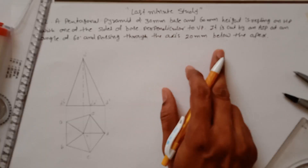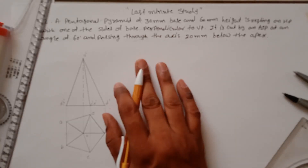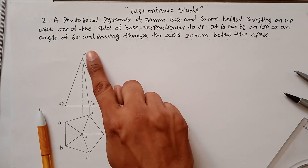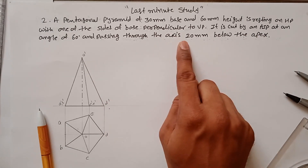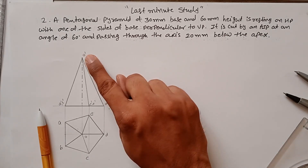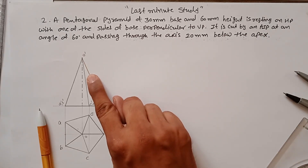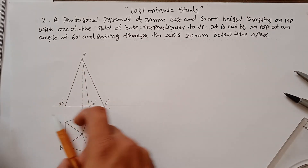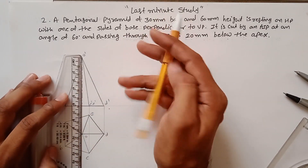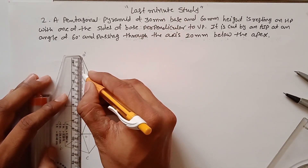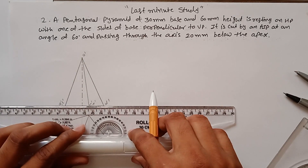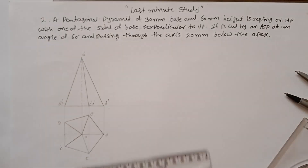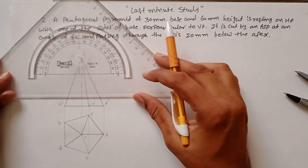Before developing the surface, the sectional position is given: the solid is cut by an AIP at an angle of 60 degrees passing through the axis 20 mm below the apex. So this point is the apex point — you have to measure a distance of 20 mm below it and draw a line at an angle of 60 degrees. Just measure the distance of 20 mm, draw a horizontal line for angle measurement, and measure the angle of 60 degrees.